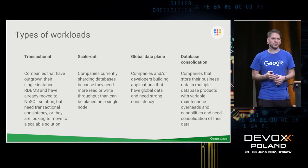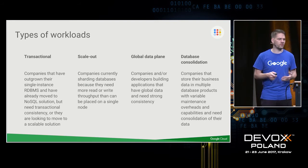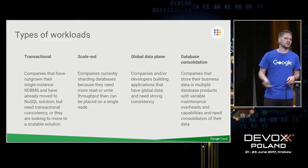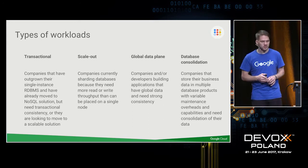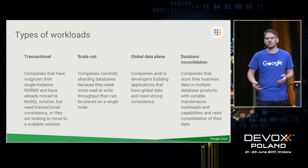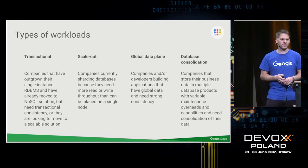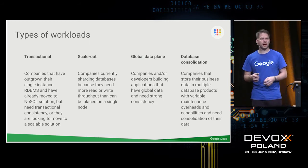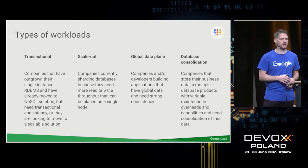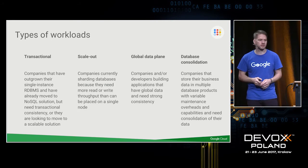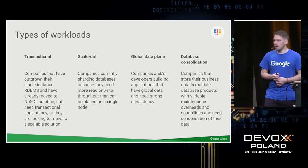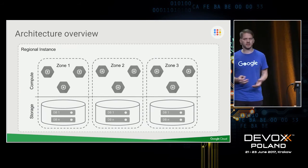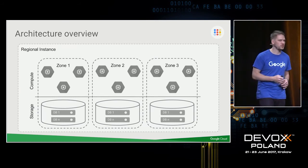We also see data consolidation use cases. Spanner doesn't have the restrictions of a few terabytes of manageable data — you can manage tens to hundreds of terabytes, up to petabytes. This means you can consolidate data in Spanner instead of having a traditional database, ETL-ing data into a data warehouse, merging it with a NoSQL database, and doing analytics on that. Now let's go in a bit more detail on how Spanner actually works and solves these issues.